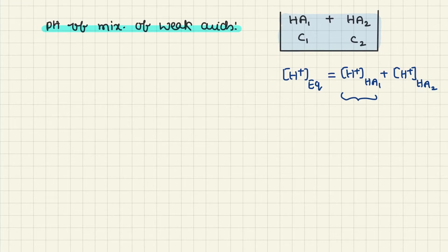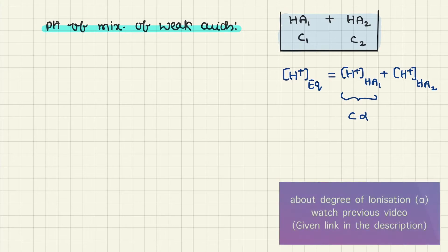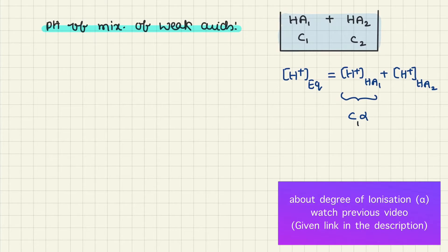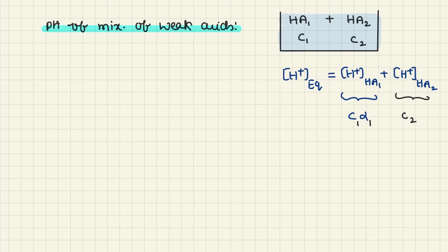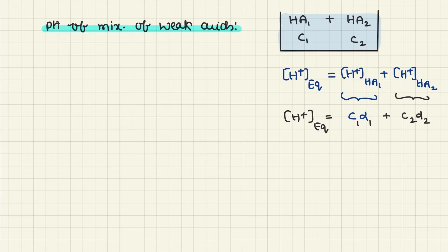We know the concentration of H+ for weak acids is usually expressed as C·α. Applying that here, for the first acid it would be C1·α1 and for the second acid it would be C2·α2. That means the total concentration of H+ at equilibrium is C1·α1 plus C2·α2.